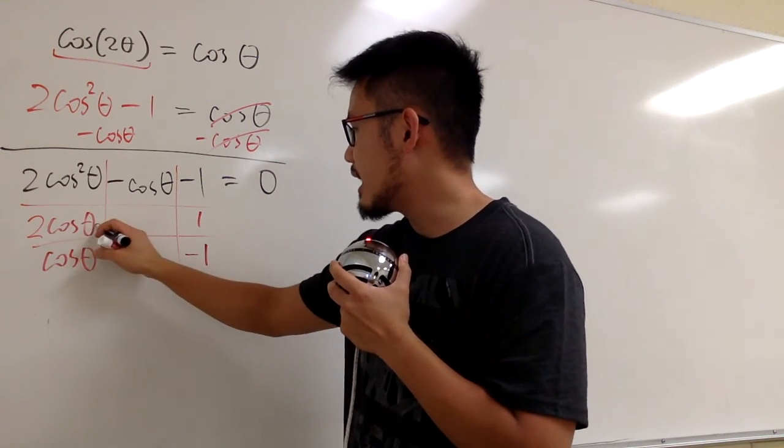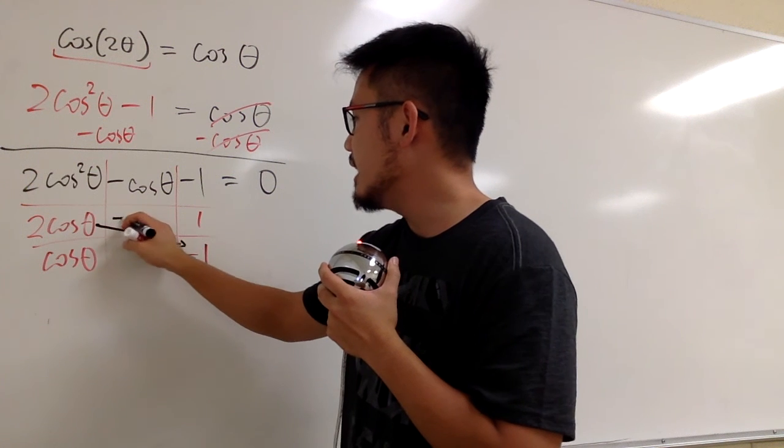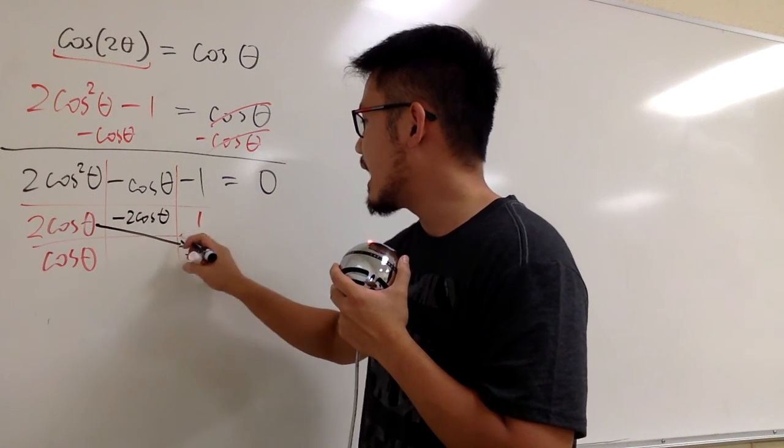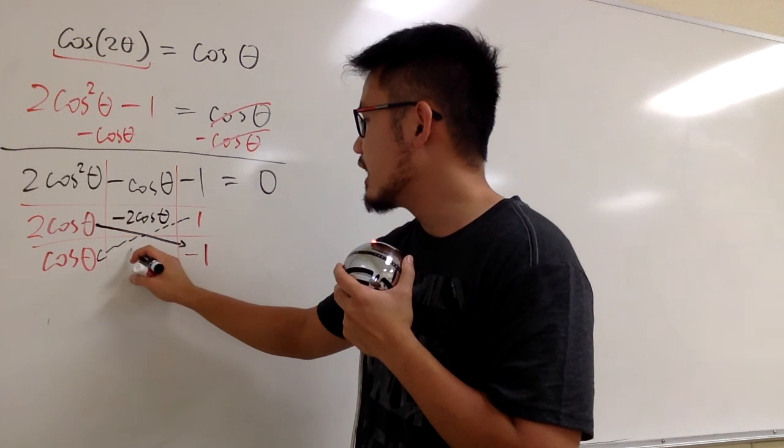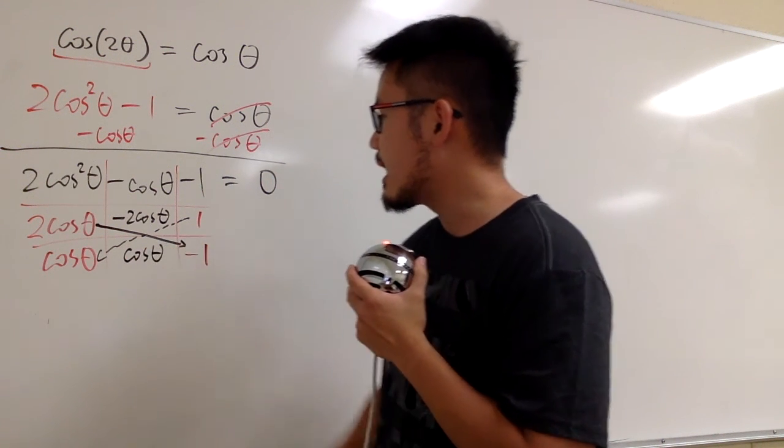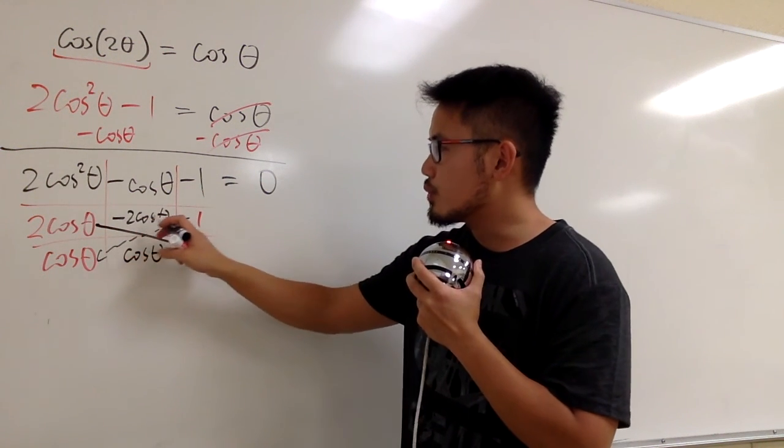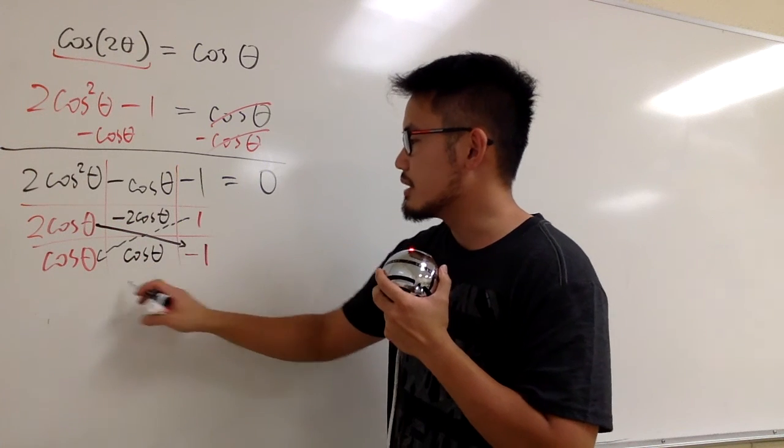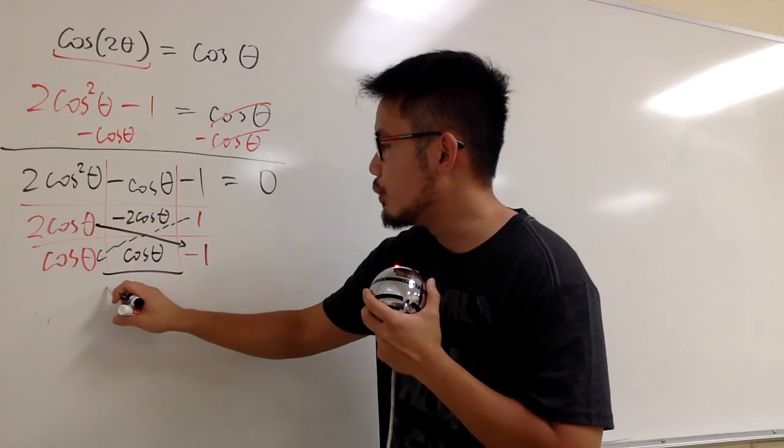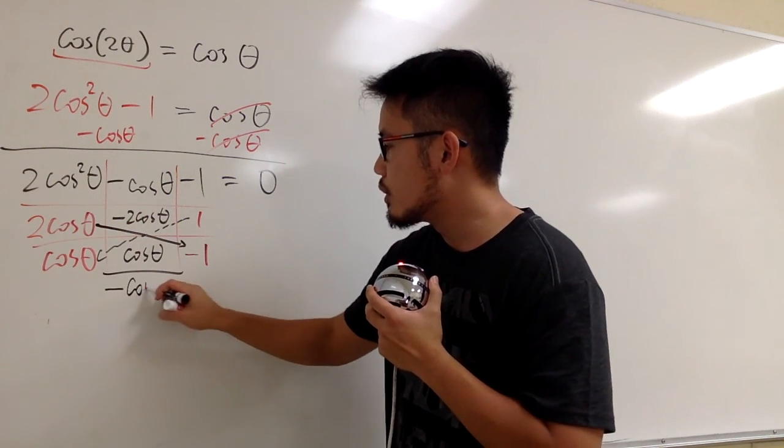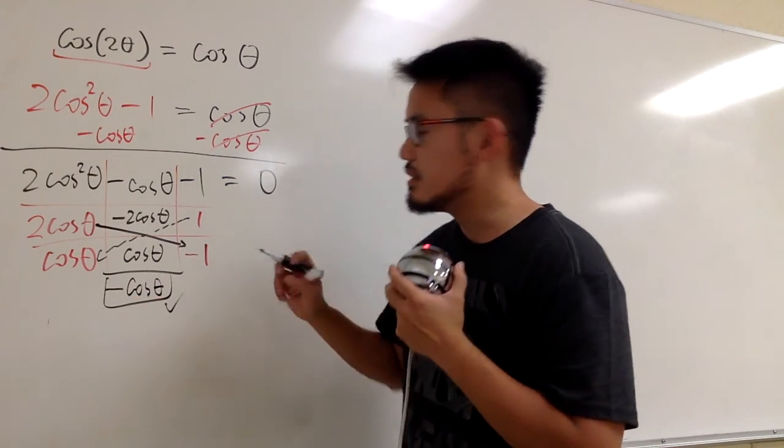2 cosine θ times negative 1 gives us negative 2 cosine θ. And then, we take 1 times cosine θ gives us positive cosine θ. And then, negative 2 cosine θ plus cosine θ, right? When you combine these two, we do end up with negative cosine θ. And that means this is the right combination.